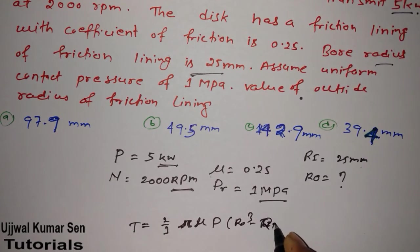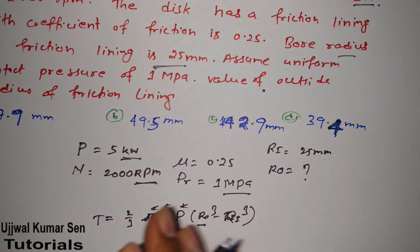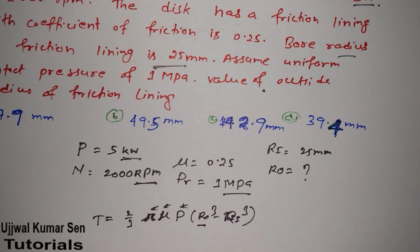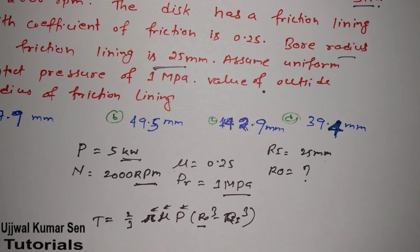Using T = (2/3) × π × μ × p × (r_o³ − r_i³), we need to find r_o³. We know π, μ, and p, but we don't yet know T. If you are preparing for GATE, you need to understand the relations between formulas. Solving numerical problems is the best way to understand these relations and remember the formulas.